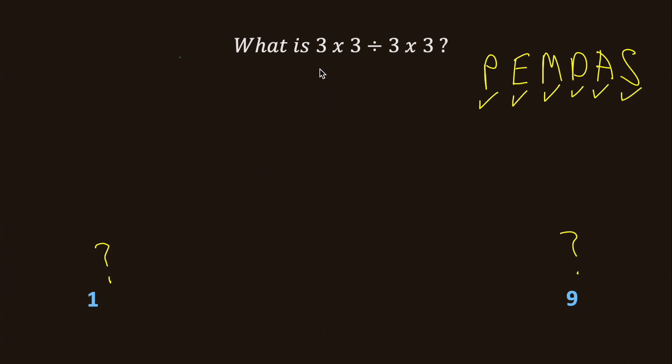So do we take 3 times 3 and get 9 and divide it by 9 to get 1? But multiplication and division have equal precedence. Multiplication does not go before division.